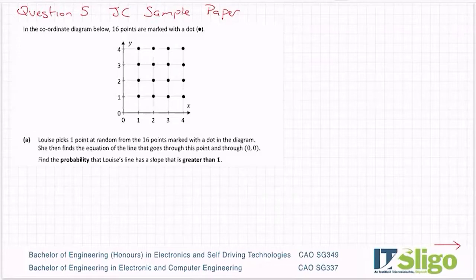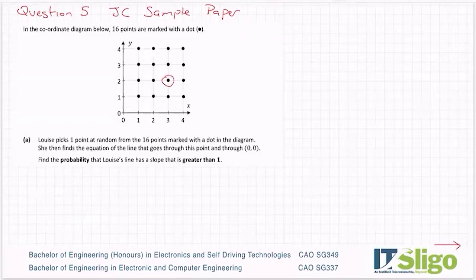So she picks a point at random. Let me pick a point at random — so that one there. She picks one point at random marked with the dot, then finds the equation of the line that goes through this and zero.